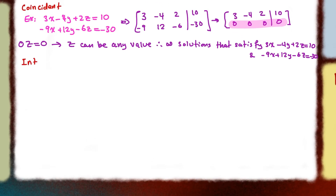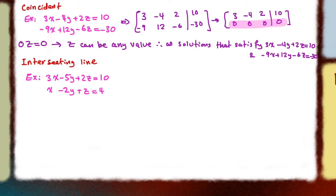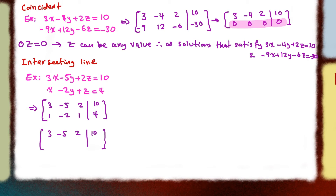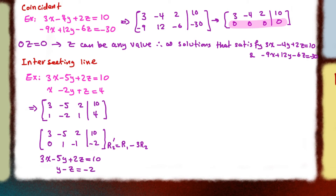Finally, we can have two planes meet at a line or intersect at a line. Let's look at this example. We're going to use augmented matrix and write it down, trying to get the left bottom corner to equal zero. Our lowest common multiple is 3, so we do R1 minus 3 times R2, and we get 0, 1, negative 1, negative 2. This means that y minus z is equal to negative 2. We can use this second equation and let either y or z equal to t, some parameter. We're going to let z equal to t and use that to solve for y.